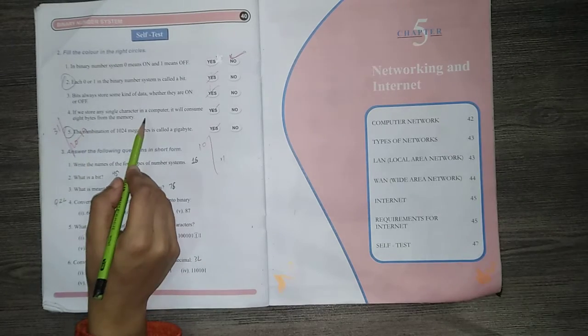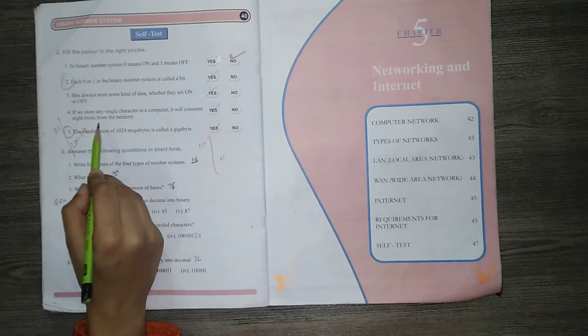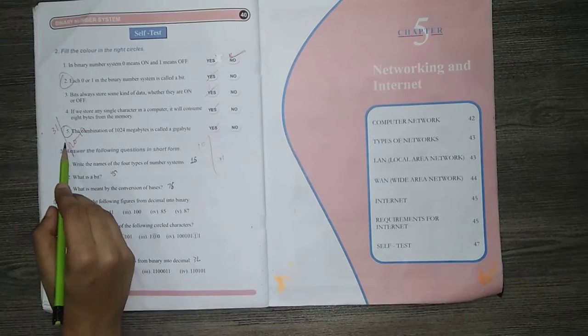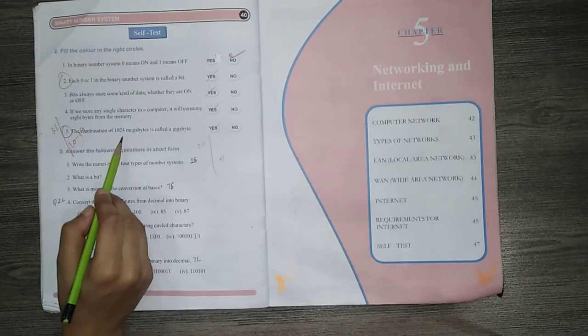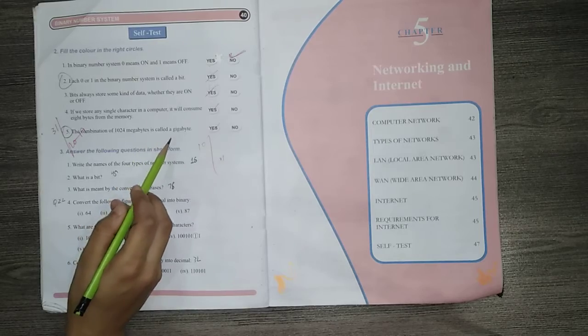Number 4, if we store any single character in a computer, it will consume 8 bytes from the memory. Yes. Number 5, the combination of 1024 megabytes is called a gigabyte. Yes.